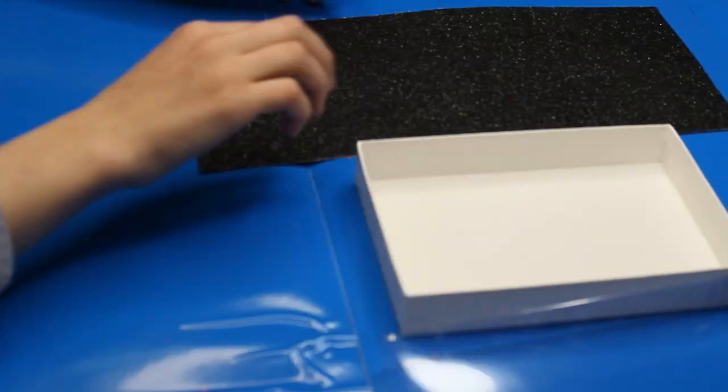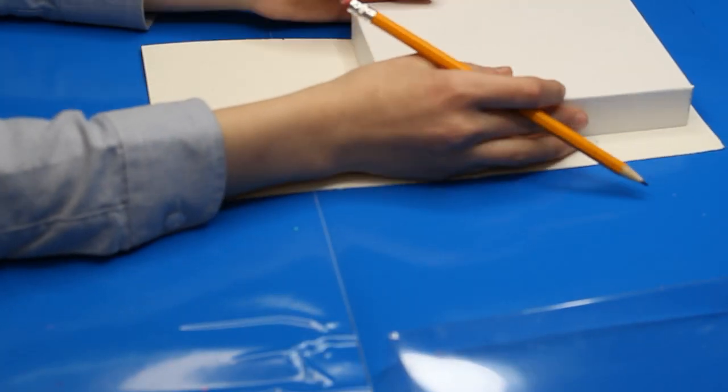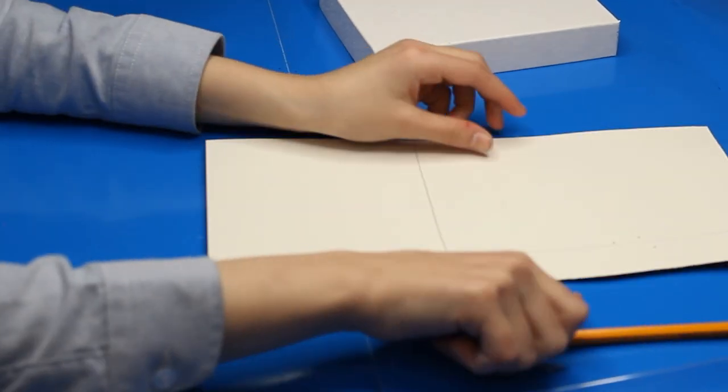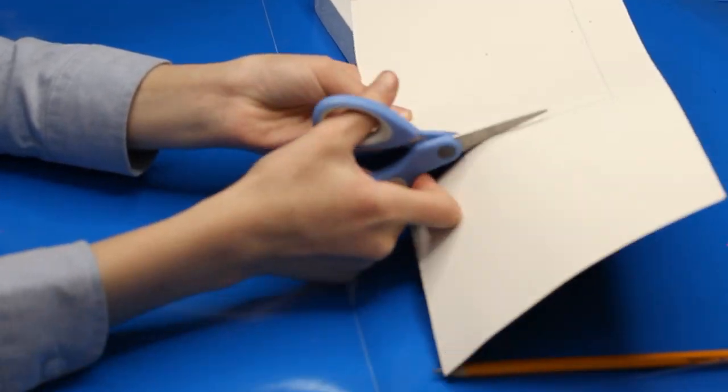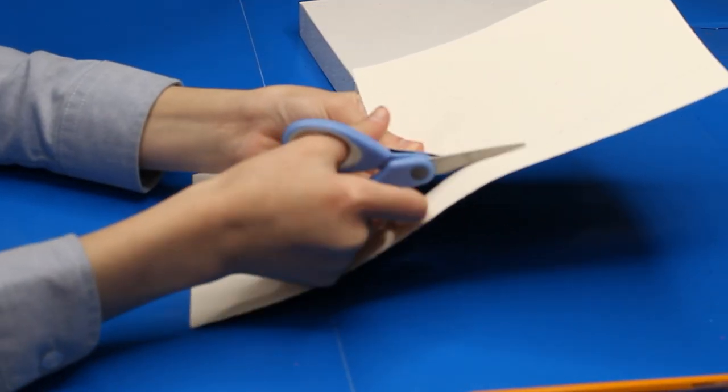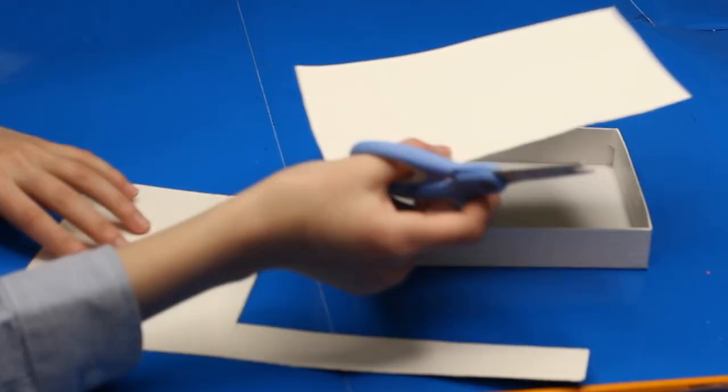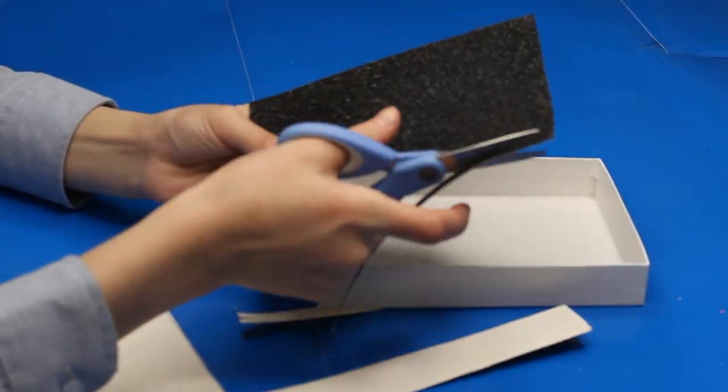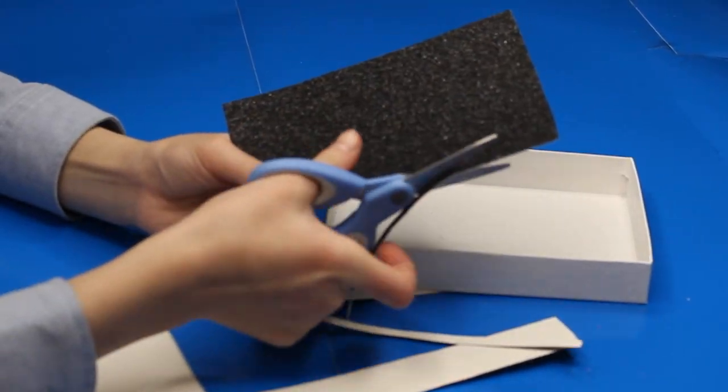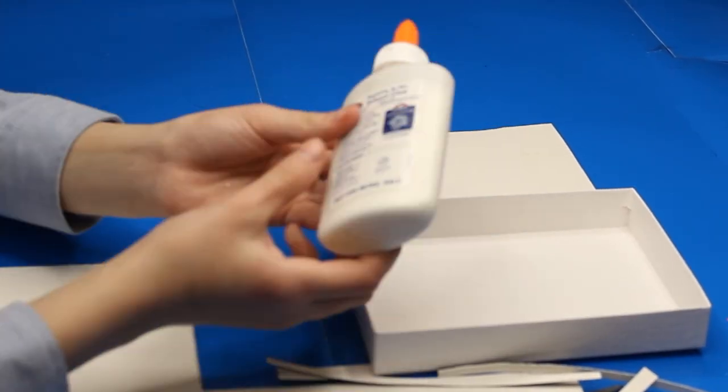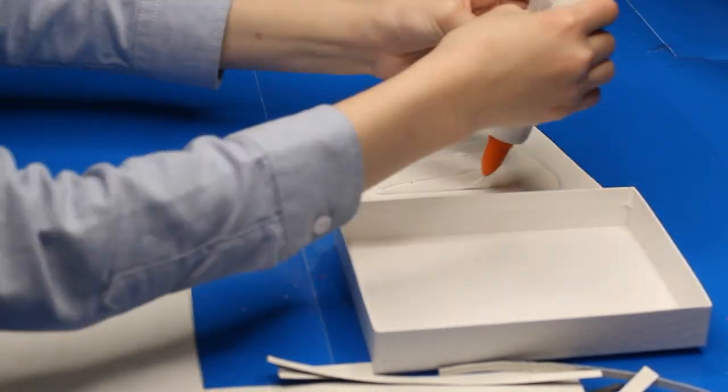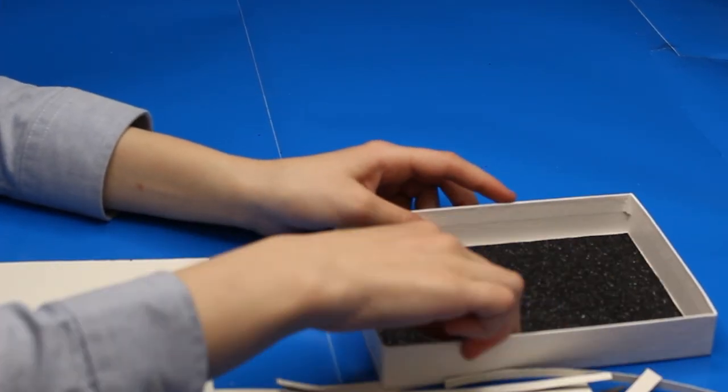First things first, you will take your shadow box, trace out its size on your black paper and cut it out. Trim it if necessary. Then glue the black paper onto the shadow box and put it to the side.